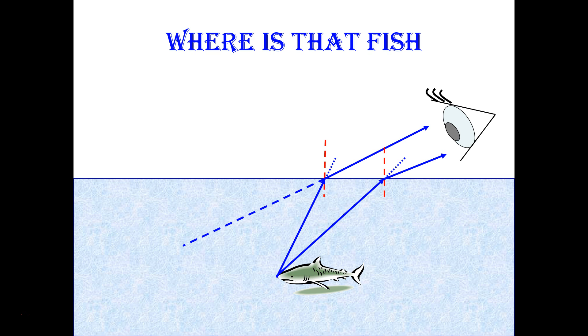But as before, your brain thinks that that light must have traveled in a straight line. Where those two straight lines meet is the image that your brain forms of the tip of the fish's nose. So your brain thinks that the fish is, in fact, right over there.